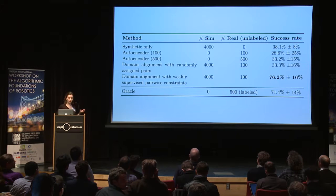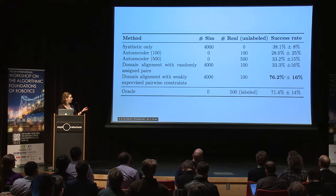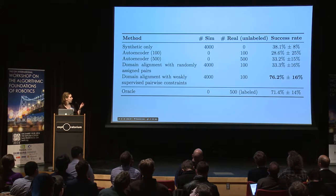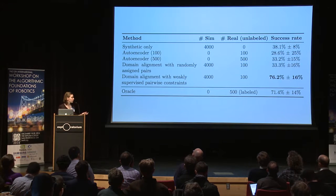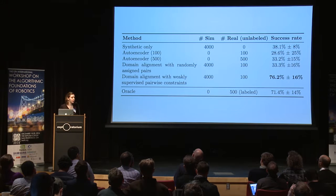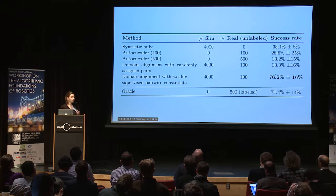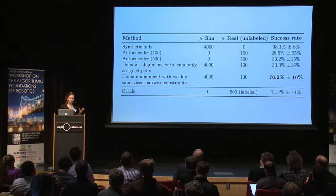Comparing our method with using synthetic-only data, we see a much higher success rate. Using randomly assigned pairs instead of our pairing method doesn't help. An autoencoder performs quite poorly due to the small number of real images, failing to detect the target object position. With our method, we use only 100 unlabeled real images along with 4,000 labeled simulated images to learn a functioning neural network policy that can detect the target object from vision.